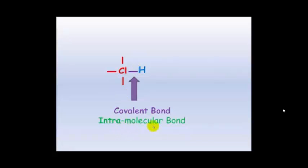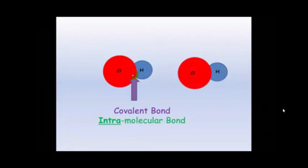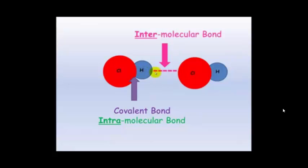Covalent bonds are intramolecular bonds — 'intra' meaning within the molecule. This term gets confused with 'inter.' Think of it as the intranet versus the internet. The intranet at school is the network within the school, so the intramolecular bond is within the molecule. The intermolecular bond is between different molecules, like the internet connecting different schools.